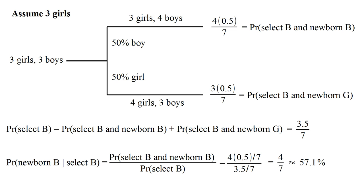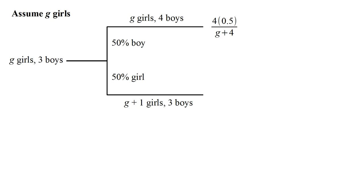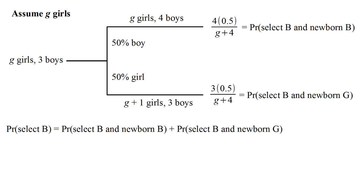Now what would happen in general? We assumed three girls, but let's assume we have g girls. We start out with g girls and three boys. There's a 50% chance we have a boy, resulting in g girls and four boys. There's a 50% chance we have a girl, resulting in g plus one girls and three boys. In the top branch, there's a 4 divided by g plus 4 chance of selecting a boy, multiplied by the 50% probability. In the bottom branch, we have three boys divided by g plus 4 children total, multiplied by the 50% probability.